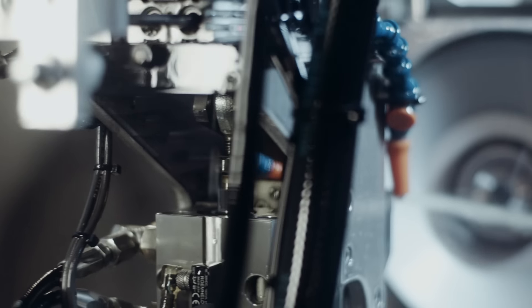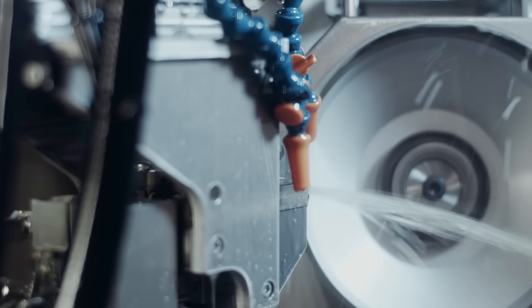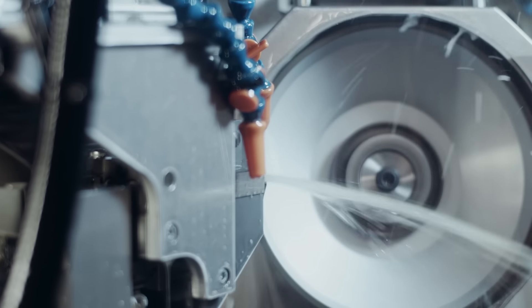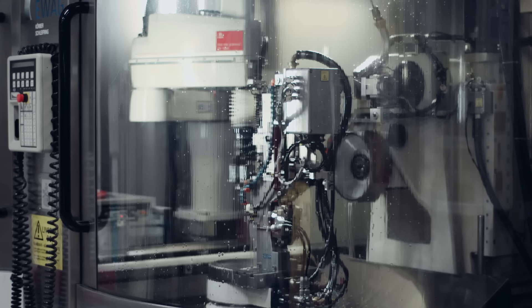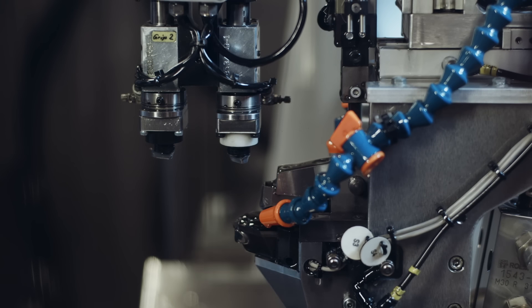As the cemented carbide insert is so hard, a disc with 150 million small industrial diamonds is used to grind it. The excess carbide is recycled, as well as the oil that is used as cutting fluid.